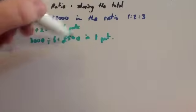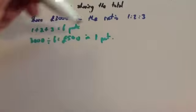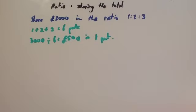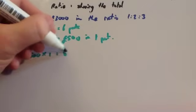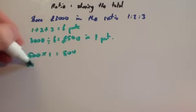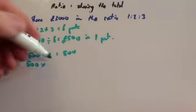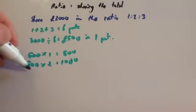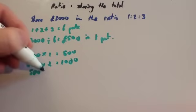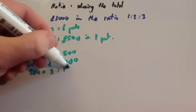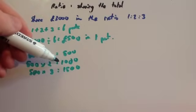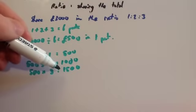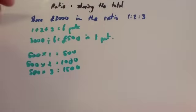Then you're going to do 500 times 1, 500 times 2, and 500 times 3 to find out how much each person would get. So 500 times 1 equals 500. 500 times 2, which equals 1,000. And 500 times 3, which equals 1,500. And if you add this together, 500 plus 1,000 is 1,500, plus another 1,500 is £3,000, what you started with.